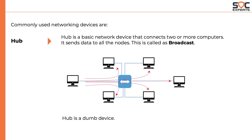A HUB is a basic network device that connects two or more computers. It sends data to all the nodes — this is called BROADCAST. Because it broadcasts the data to every computer instead of sending it to an exact destination, a HUB is usually termed a DUMB device.